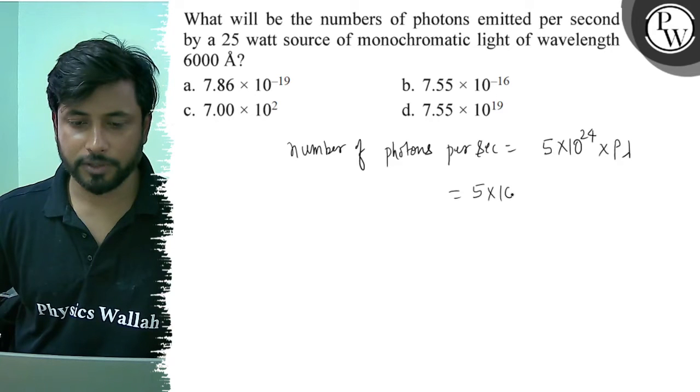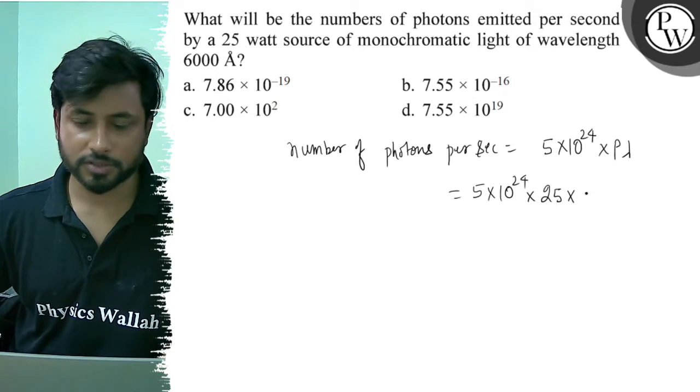We have to put 5 into 10 to the power 24. Power is 25 watts. Lambda is 6000 angstrom, or 6 into 10 to the power minus 7.